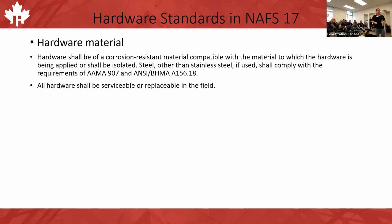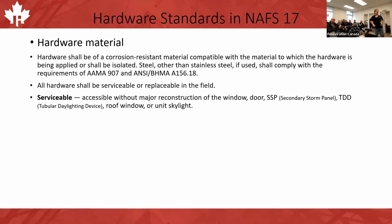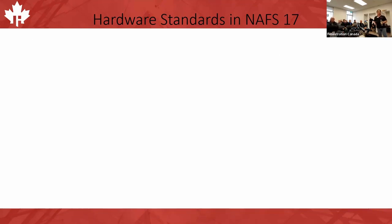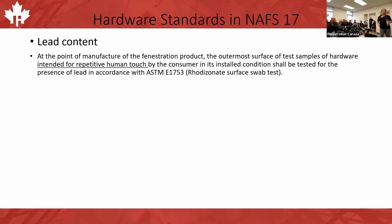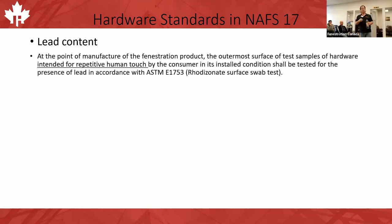All hardware shall be serviceable or replaceable in the field. The NAFS definition of serviceable is accessible without major reconstruction of the window, door, secondary storm panel, tubular daylighting device, roof window unit, or skylight — so you have to be able to take that part and replace it without ripping the product apart. Lead content is another requirement not often thought about when selecting hardware. At the point of manufacture, the outermost surface of hardware intended for repetitive human touch — handles, levers, etc. — must be tested.